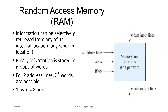First, let's look at the RAM structure. The information can be selectively retrieved from any one of its internal locations. As seen in the diagram, it has k address lines to address or access 2 power k words in the memory. The memory unit has 2 power k words, and for that you require k address lines. It has n input data lines through which data is transferred in and out of the memory. It has two control inputs called read and write, and n data output lines.